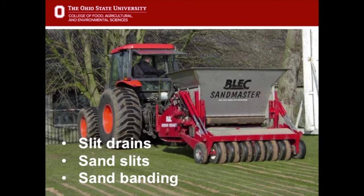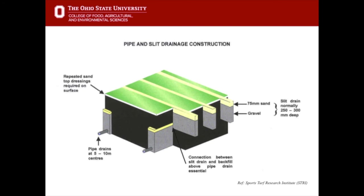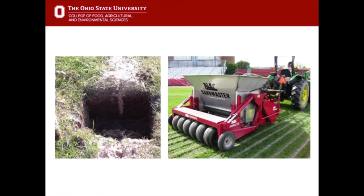A quicker way of adding sand is to put slit drains in, sometimes called sand slits or sand banding. A machine passes over the field, creates a groove several inches deep, and that groove is backfilled with medium coarse sand. These grooves are just a few inches apart. Pipe drain systems run perpendicular to the sand slits so that rain falls on the surface, passes down through the sand slit into the gravel trench, and away through the pipe.